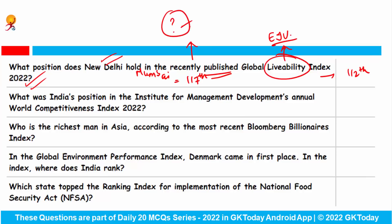What was India's position in the Institute for Management Development World Competitiveness Index 2022? India's rank was 37th. The top three countries were: first was Denmark, second was Switzerland, and third was Singapore.